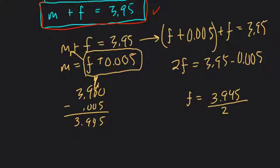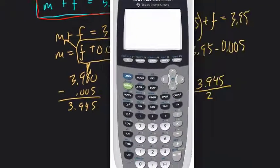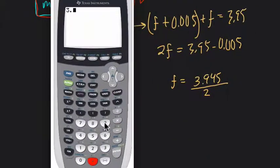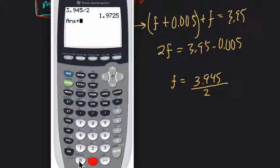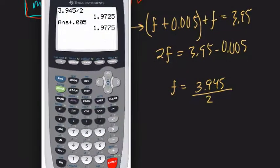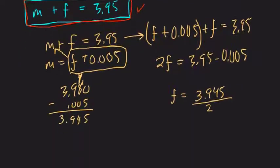So let's just figure that out real quick. 3.945 divided by 2 is 1.9725 million. Now, if we add 0.005 to that, we get McGee's earnings.